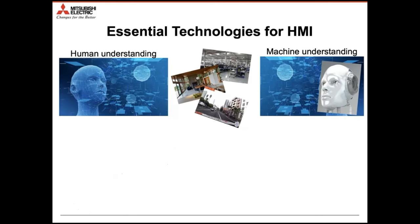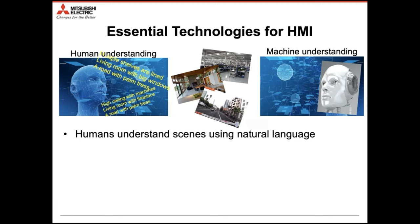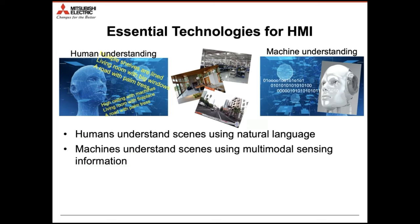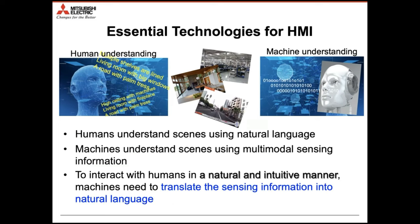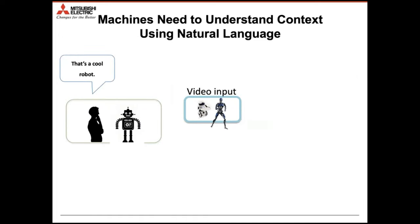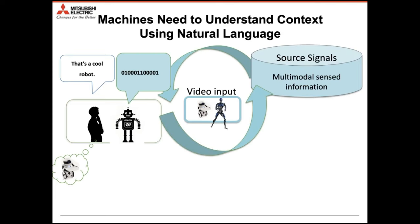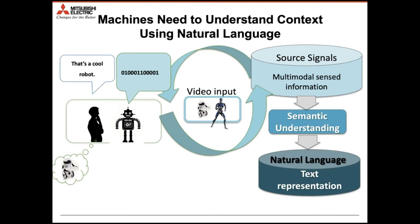When we build a system to communicate between humans and machines, first of all, humans understand scenes using natural language. So machines themselves need to understand scenes using language. This is because their understanding is based on numerics, and that cannot work for humans. We need to let systems understand scenes using natural language so we can communicate together. We really need semantic understanding.